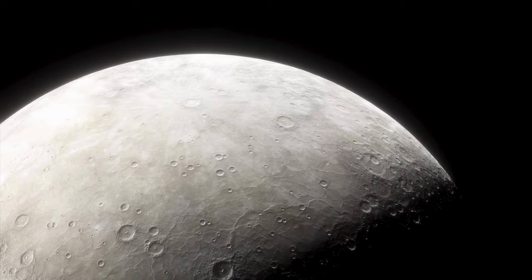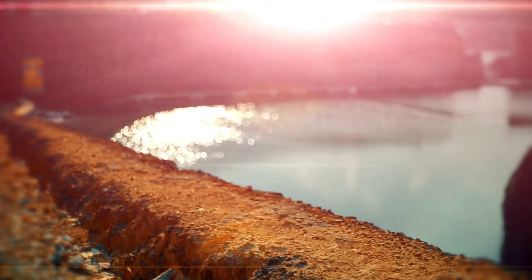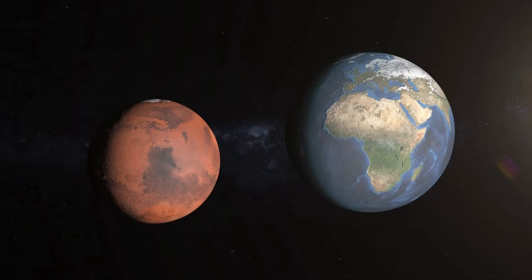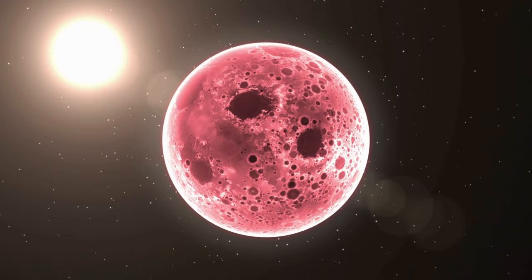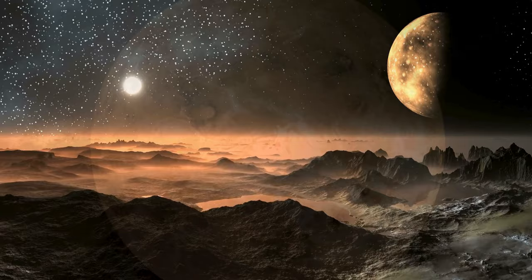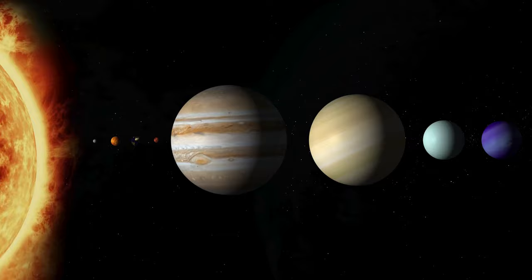What truly distinguishes Proxima b is its brief orbital period. The exoplanet completes a full revolution around Proxima Centauri in a mere 11.2 Earth days. This short year raises compelling questions about the environment and potential habitability. Such a swift orbit suggests that Proxima b likely experiences gravitational and tidal forces very different from Earth. But how did we discover it in the first place?